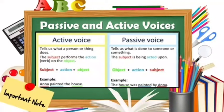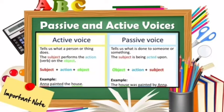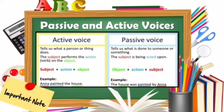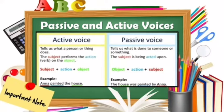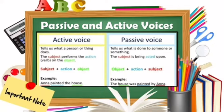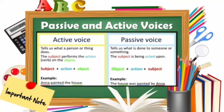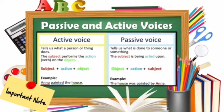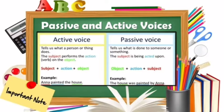Take note of this: active voice tells us what a person or thing does. The subject performs the action or the verb on the object. Our pattern is subject plus action plus object. Example: 'Anna painted the house.' Anna is the subject, painted is the action, and the object is house.